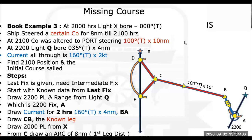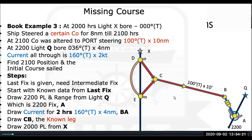Let's see the missing course problem. Missing course means the ship is somewhere here and it is going from here to here to here — three course legs are there. But in the question we are given only two legs; one is this one and this one, and the third leg we have to find out. So this is the missing course problem.